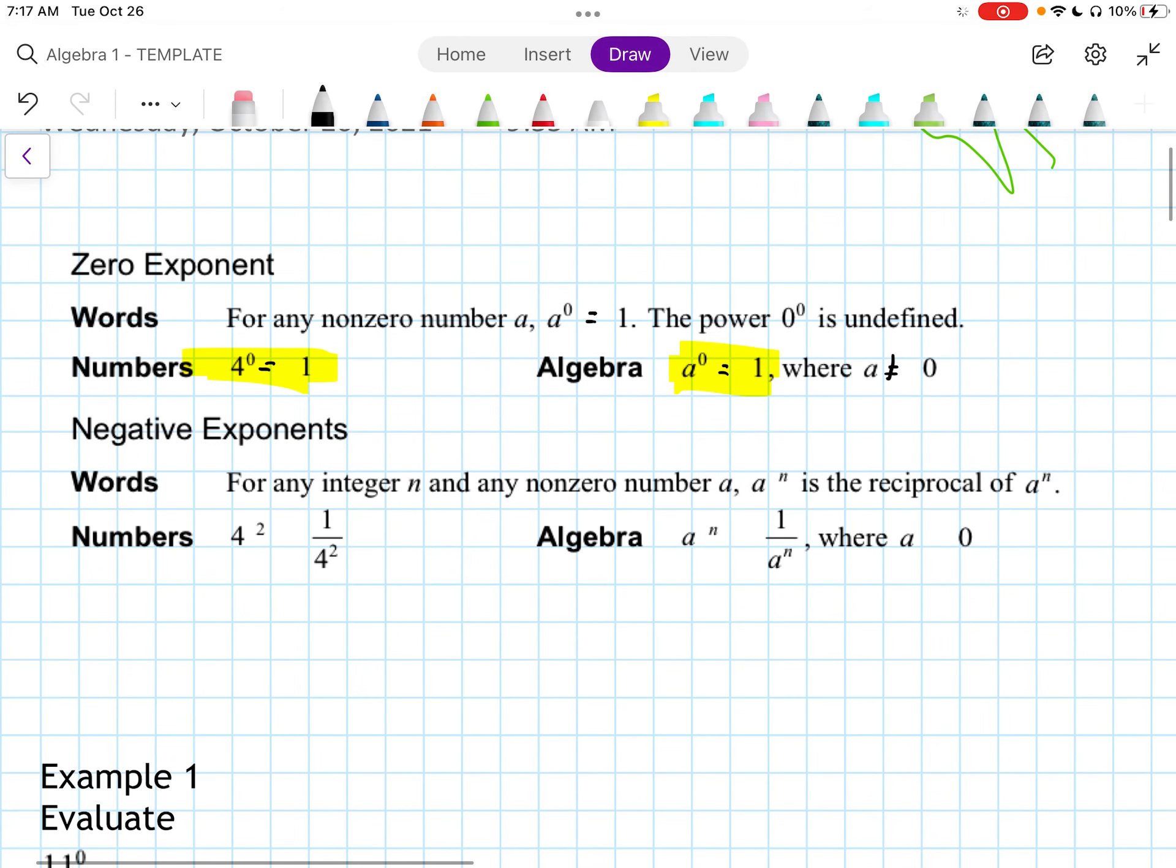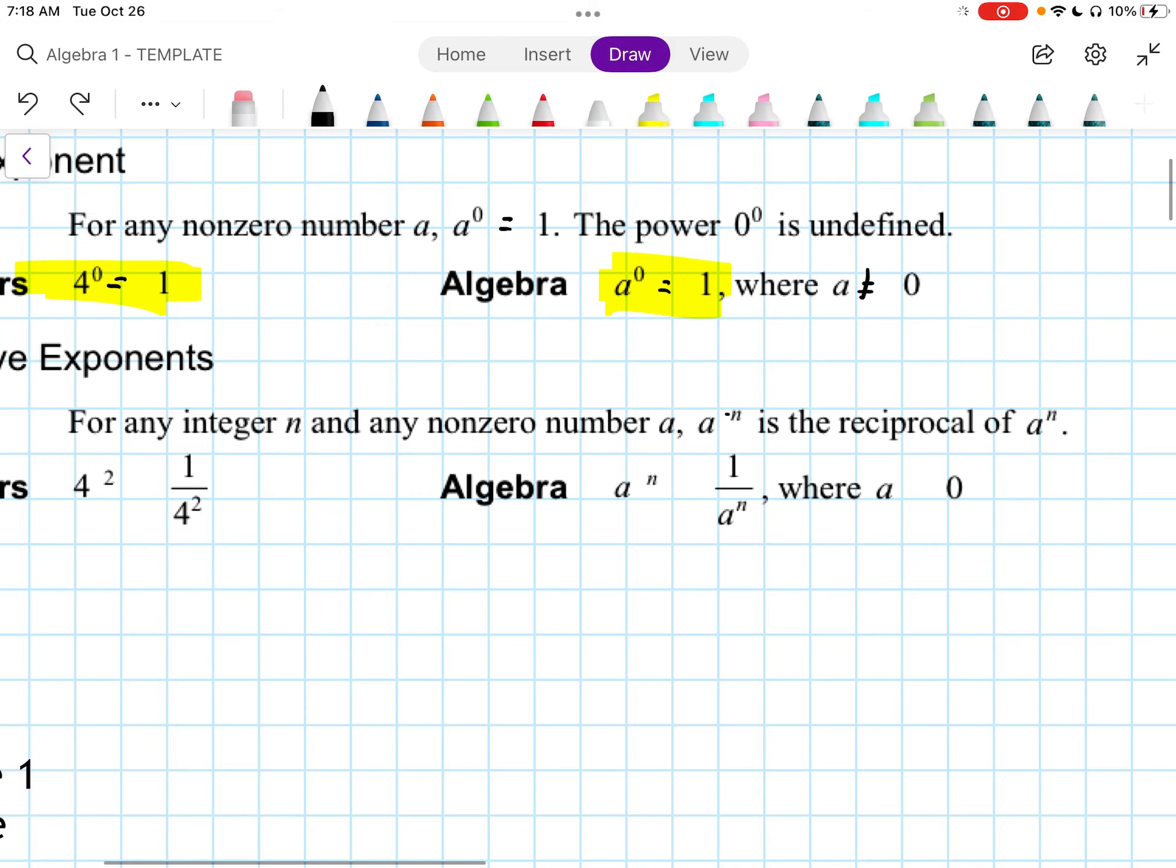Negative exponents. For any integer n and any non-zero number A, A to the negative n, let me see if I can draw that a little bit better. A to the negative n is the reciprocal of A to the n. Now, what does that mean?